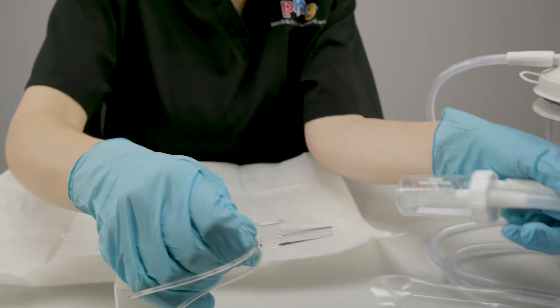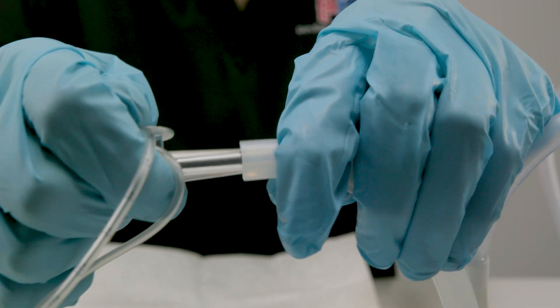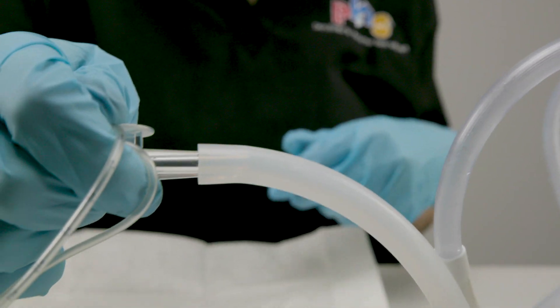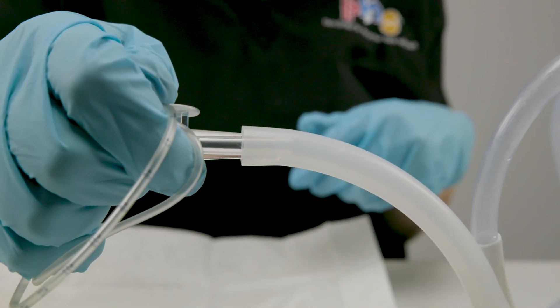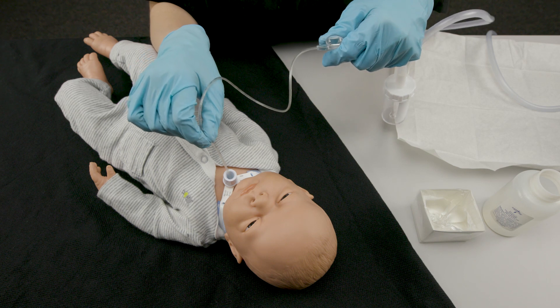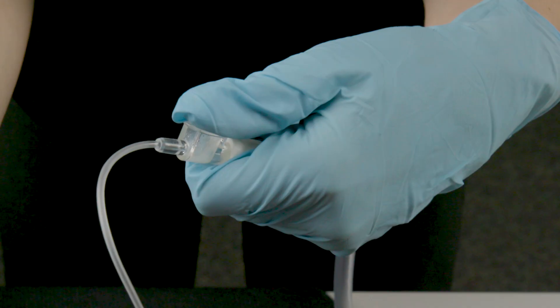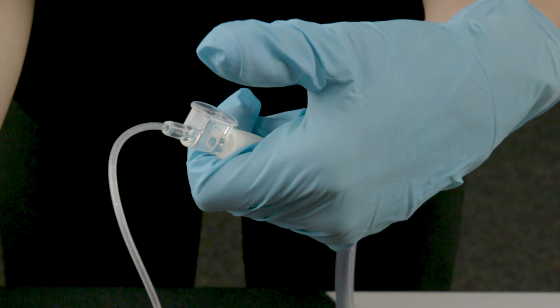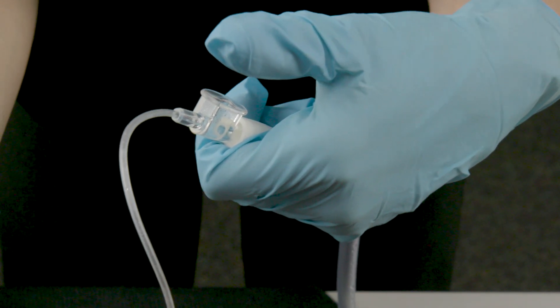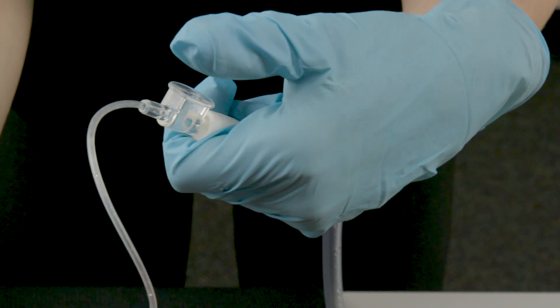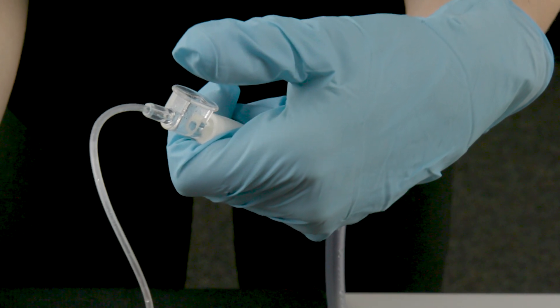Push the sterile suction catheter into the open tubing of the specimen trap. Suction the patient using sterile technique. If necessary, occasionally lift your thumb off the thumb port of the suction catheter. This short release of suction pressure helps move secretions up the catheter.